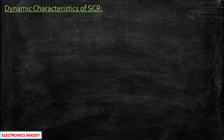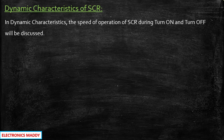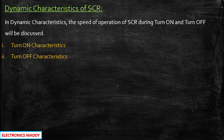Dynamic characteristics are required for determining the speed of operation of SCR, that is during turn-on or turn-off. These are divided into two separate characteristics: what happens to the device during turn-on and what happens to the device during the turn-off process.